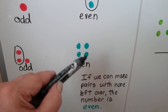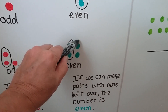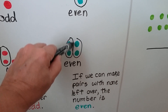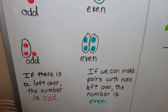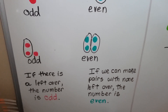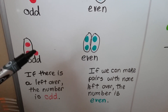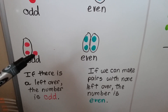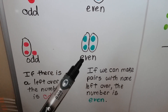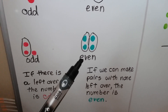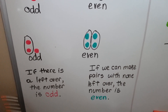1, 2, 3, 4 — we can make a pair, we can make another pair, and there's none left over, so it's even. If there's a leftover, the number is odd. If we can make pairs with none left over, the number is even.